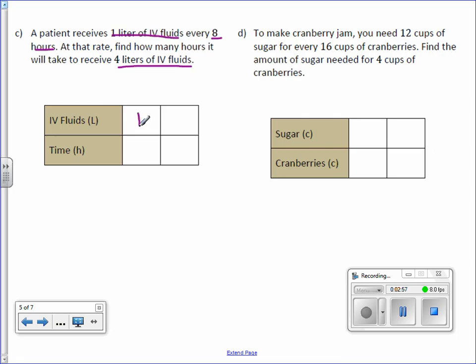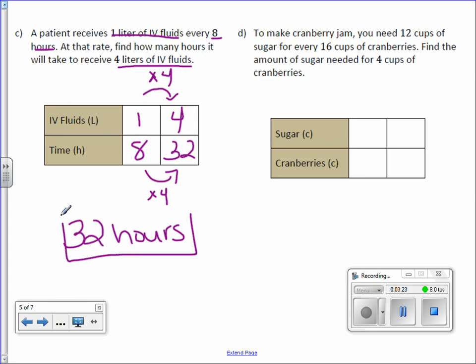So we have 1 liter of IV fluid for 8 hours. We want to know how long it will take to receive 4 liters of IV fluid. To get from 1 to 4, we multiply by 4. And we do the same underneath and get 32. So it will take 32 hours. And if you forget the units, you can just look at the label of the row.